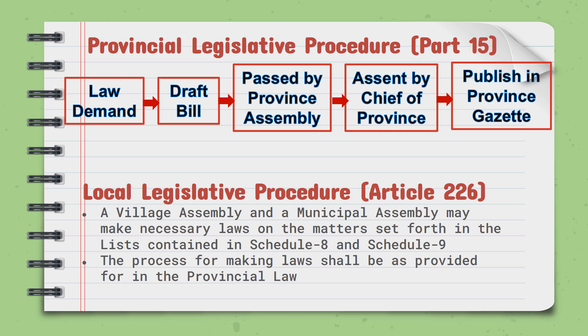While talking about the local legislative procedure, Article 226 doesn't say much about it because it states that the process of making law shall be provided for in the provincial law. It says that the village assembly and municipal assembly may make necessary laws on the matters set forth in the list contained in Schedules 8 and 9.